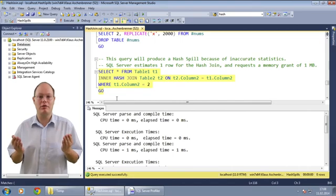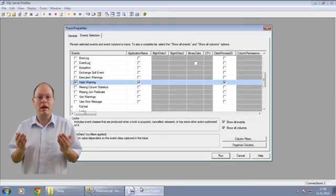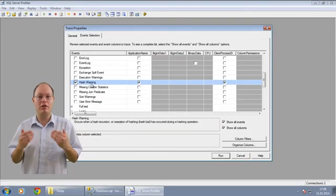I have here a query in front of me which performs in another database a join between two tables. I have also used here the query hint hash so that SQL Server is really performing a hash join in the execution plan. I have also SQL Server Profiler running and configured a trace that collects the hash warning event.